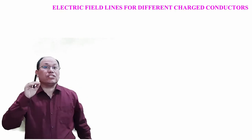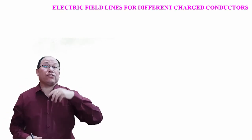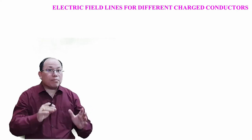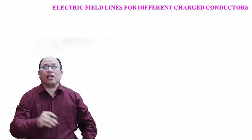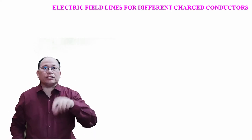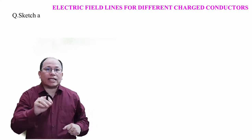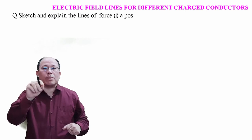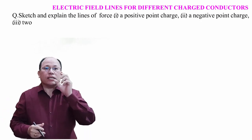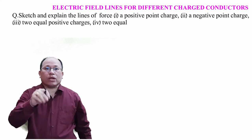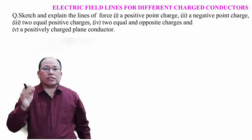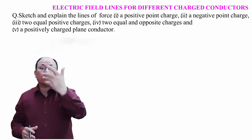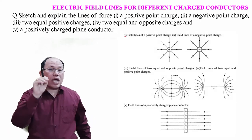Now let's look at electric field lines for different charge configurations. We will study the lines of force for: a positive point charge, a negative point charge, two equal positive charges, two equal and opposite charges (electric dipole), and a positively charged plane conductor.